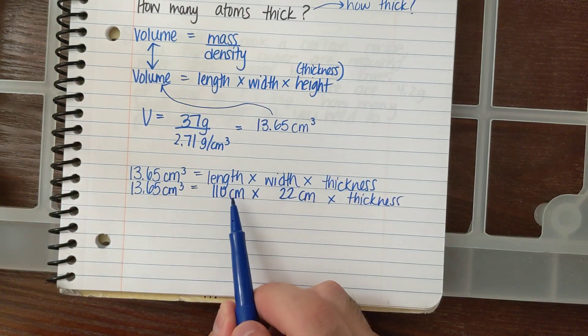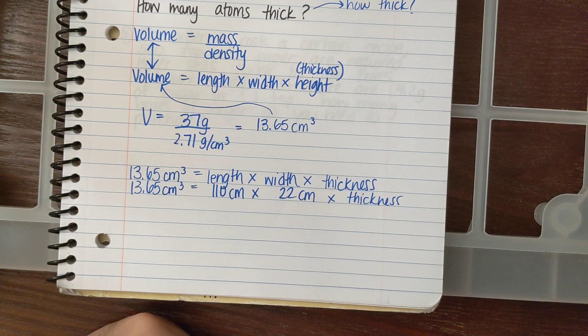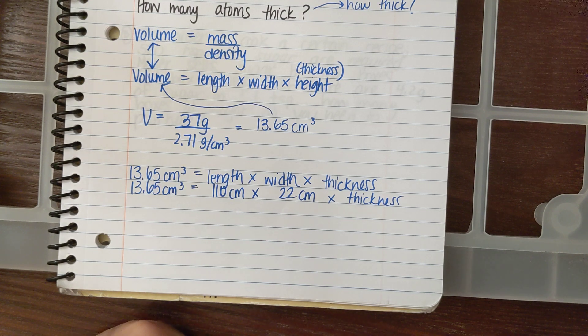If I want to solve for thickness, I have to do 110 times 22, which is 2420.